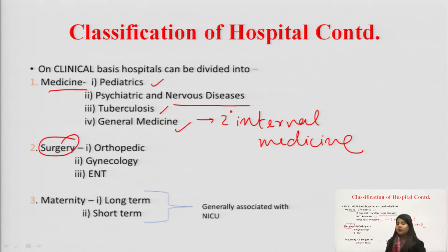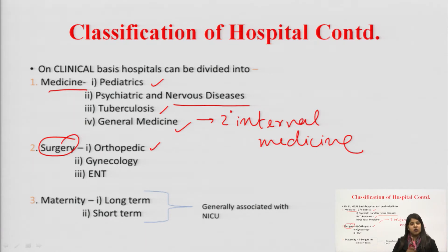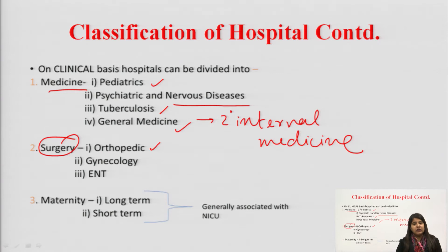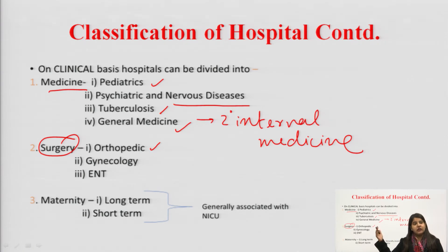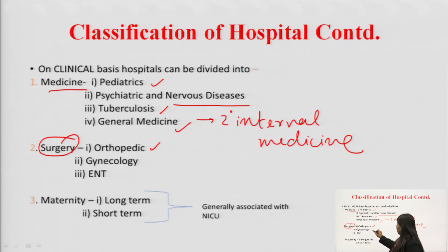Then there are surgical hospitals. A surgical hospital can be like an orthopedic hospital — these are hospitals which specifically take care of persons who have sustained injuries, for example during playing a sport. The majority of people going to an orthopedic hospital are those who sustain injuries during sports. Followed by gynecological hospitals.